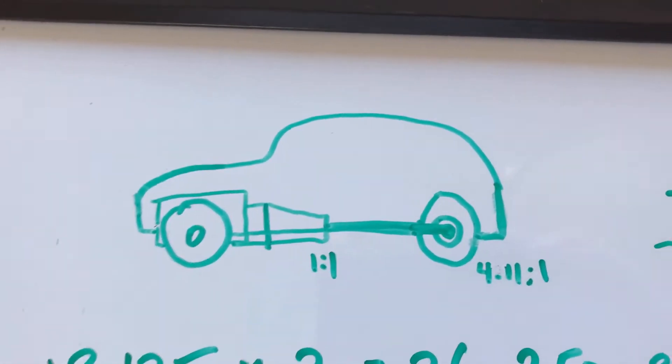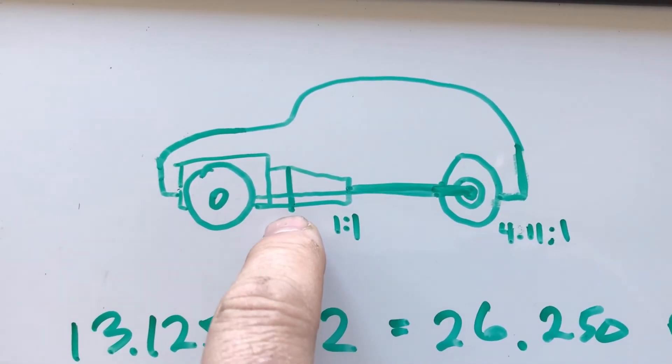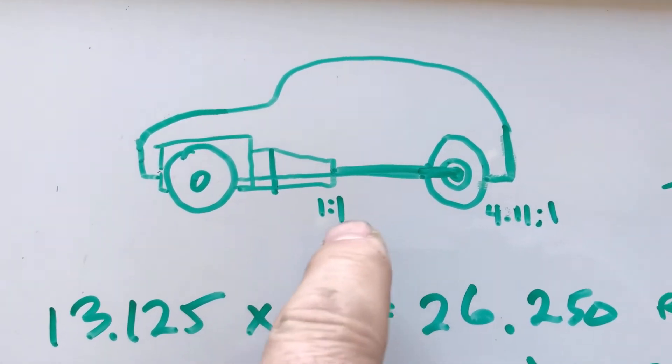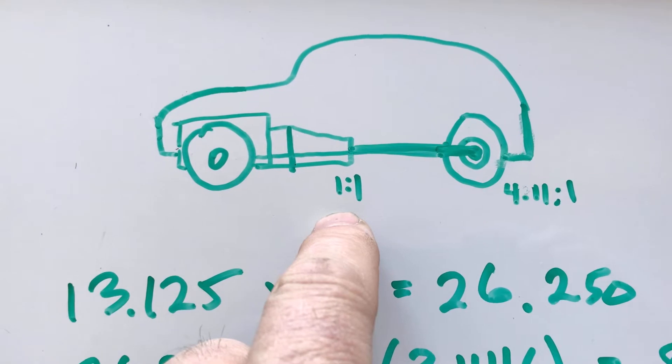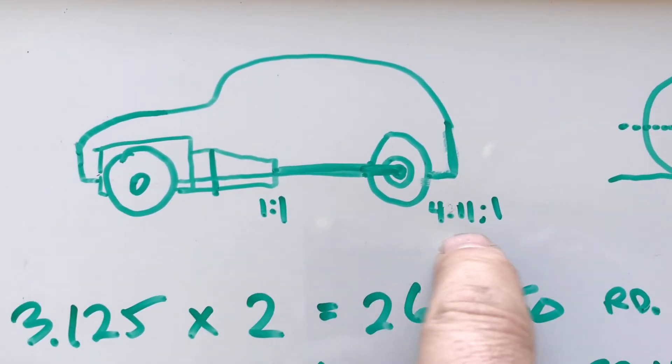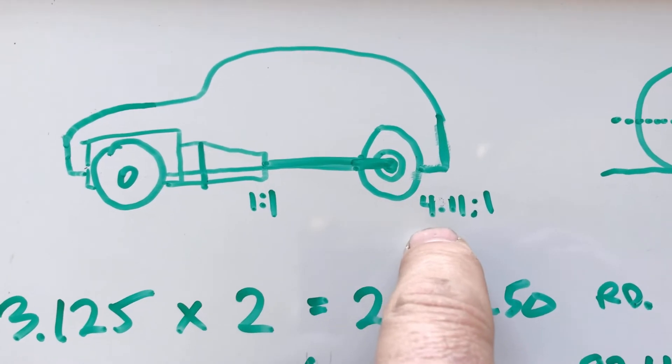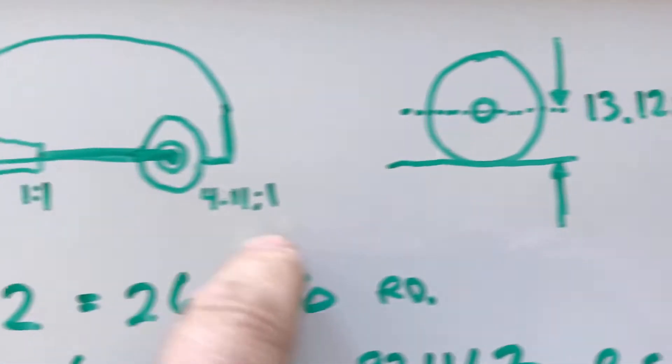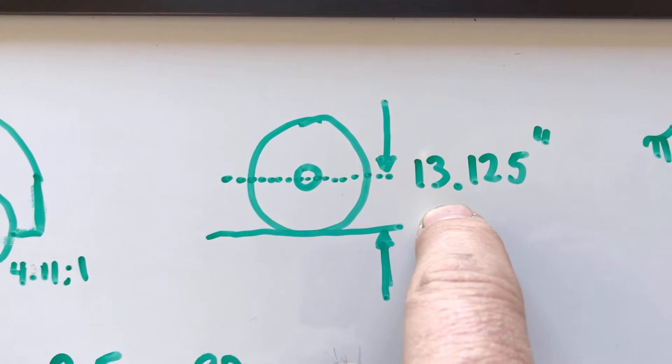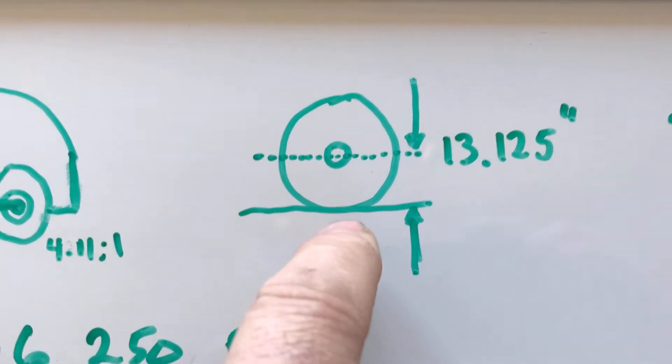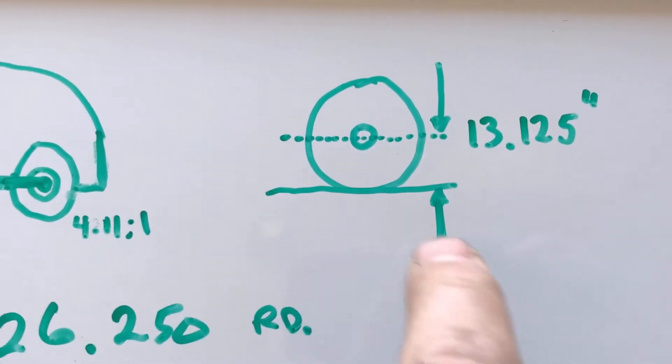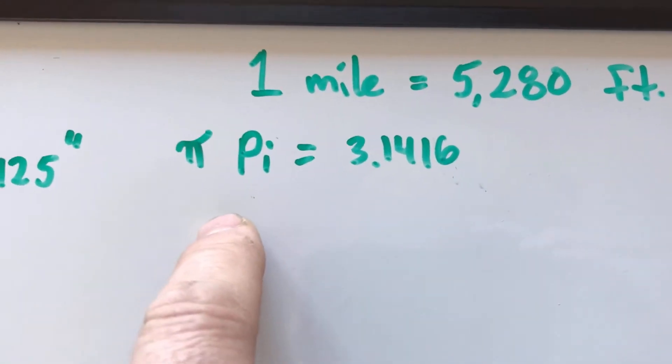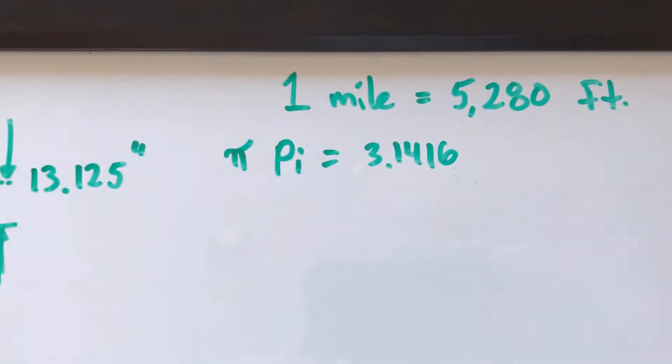This is a crude drawing of my 1938 Plymouth sedan. When I'm in third gear I do not have overdrive. For every time the engine turns once, the output shaft, the transmission, the driveshaft is also turning once, so it's a one-to-one gear ratio. The rear end of my car has a 4.11 crown and pinion gear set. When I measured, we had 13 and 1/8 inches from the center of the axle to the ground. We know that one mile is 5,280 feet and pi is 3.1416.